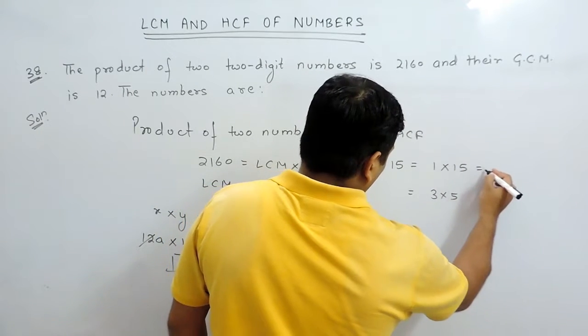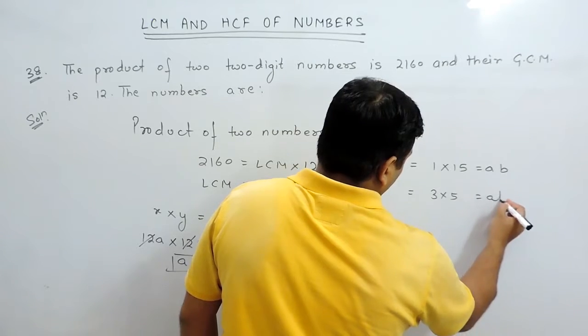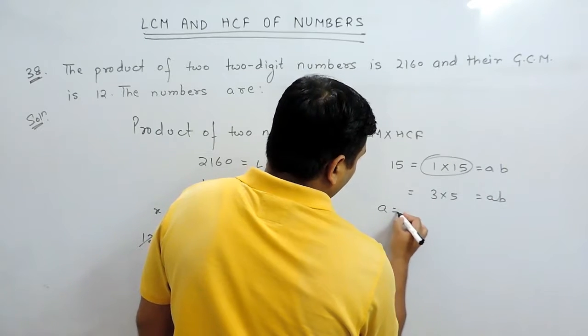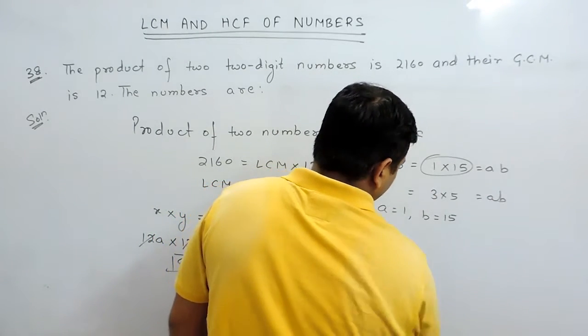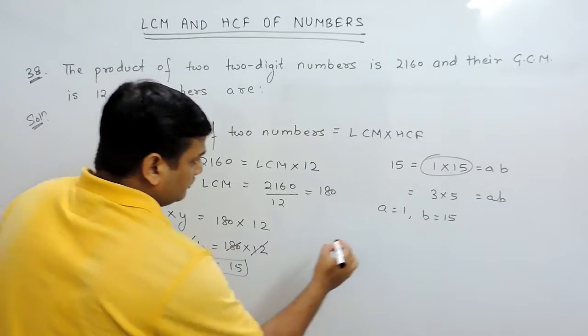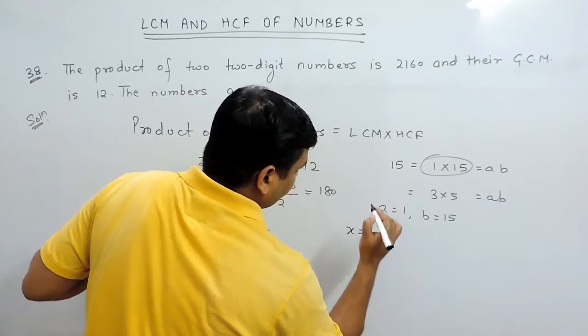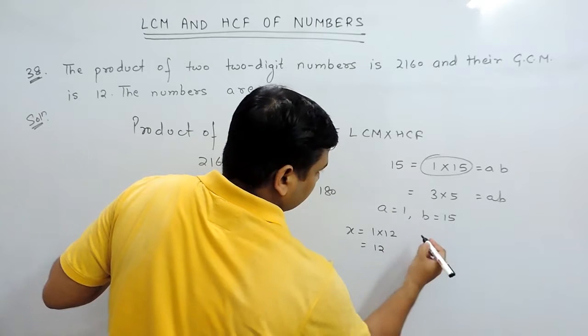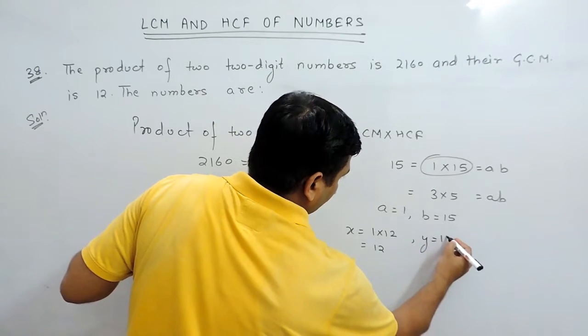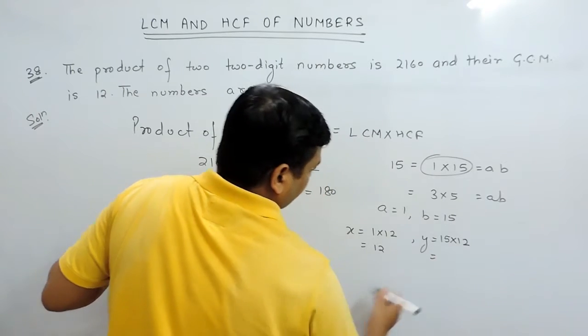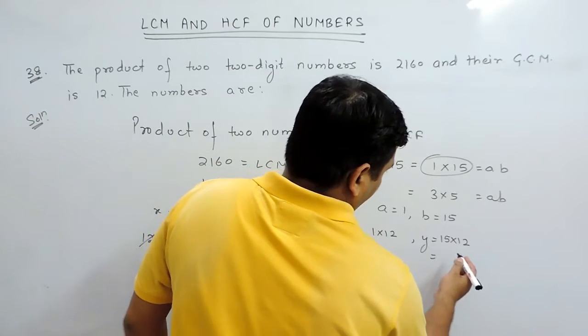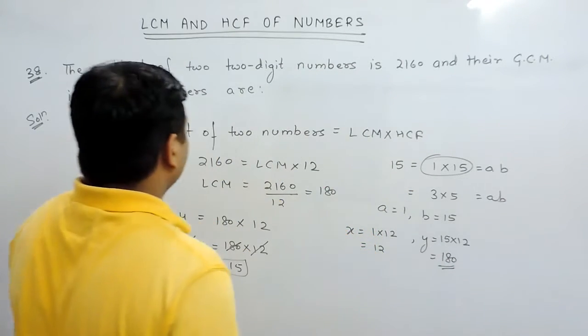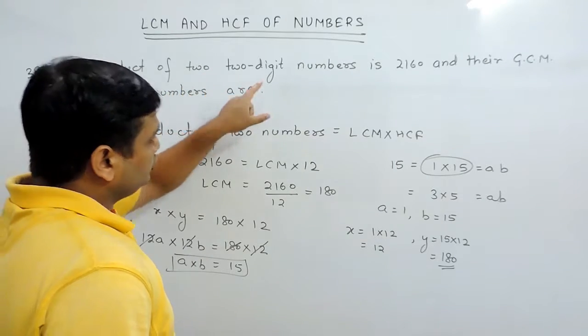Now, here, these are the values of A and B. If we take the first co-prime pair, then A equals 1 and B equals 15. The numbers will become 1 into 12, that is 12, and the second number may be 15 into 12, which is 180. But this 180 is a 3-digit number. We have to find 2-digit numbers.